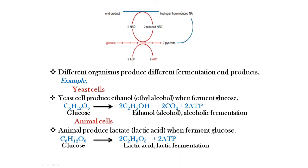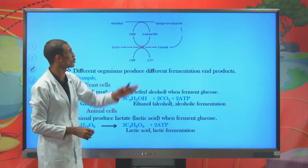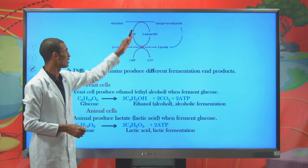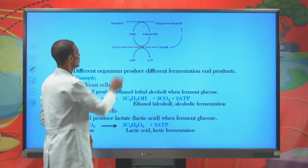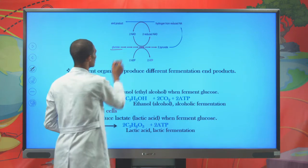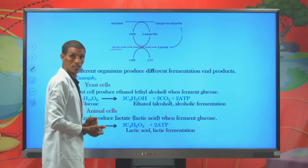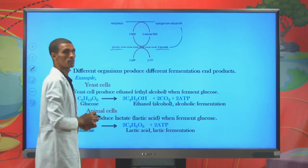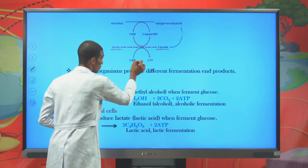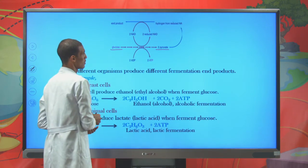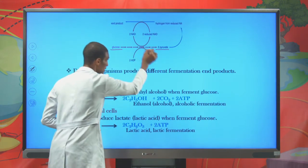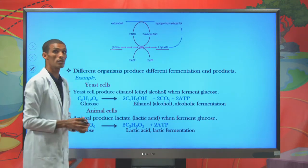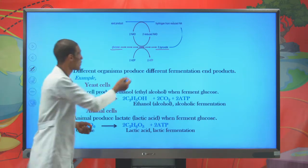Let's see how glycolysis takes place under an anaerobic pathway. There is glucose, which is the common respiratory substrate, converted to two pyruvate molecules. There is production of ATP by substrate level phosphorylation. The only ATP produced during anaerobic pathways is minimal — about two ATP.